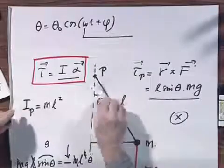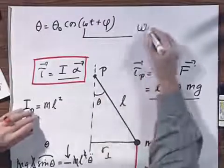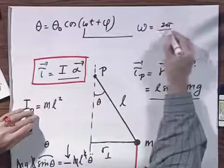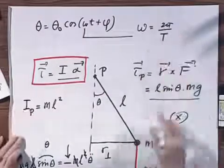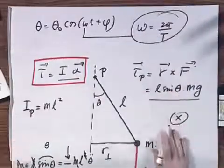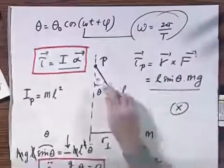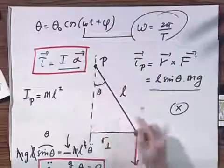It is not dθ/dt, but this omega equals 2π divided by the period of the oscillation, and that's a constant, whereas this omega, the dθ/dt, is not a constant.